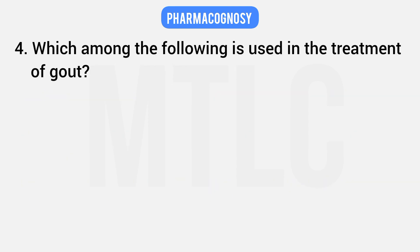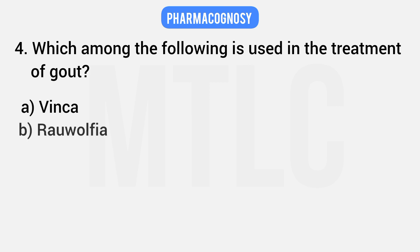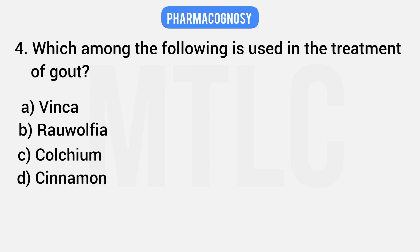Fourth question: which drug is used in the treatment of gout? Option A: Vinca. Option B: Rauwolfia. Option C: Colchicum and its synonym. The correct answer is Colchicum, which is used in the treatment of gout.